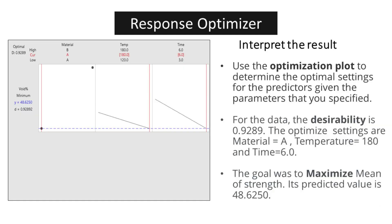After analyzing the optimization plot, it has been determined that the optimal settings for the predictors, given the specified parameters, are material A, temperature 180, and time 6. These settings have resulted in a desirability of 0.9289 for the data. The goal of the optimization was to maximize the mean of strength, and the predicted value at the optimal settings is 48.6250.